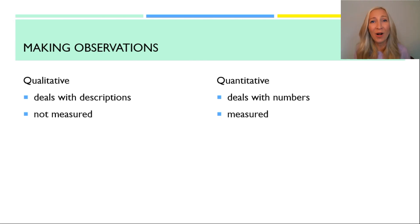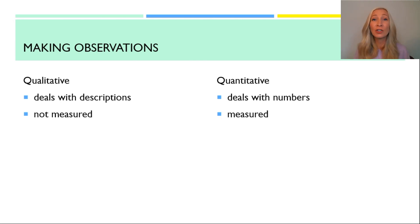Examples of qualitative observations are colors, textures, smells, tastes, and appearance. Examples of quantitative observations are length, height, area, volume, weight, speed, time, temperature, age, cost. There are multiple examples of both types of observations.